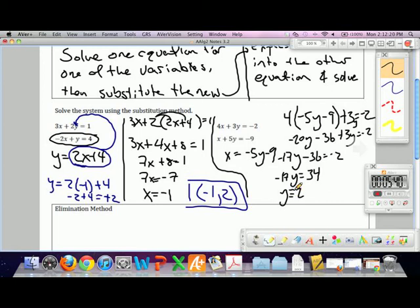Y is negative 2. Then take negative 2, plug it back in for y in the x equation. Ended up with negative 5 times negative 2 is 10 minus 9. X is 1. So our coordinate, the solution, is 1 comma negative 2.